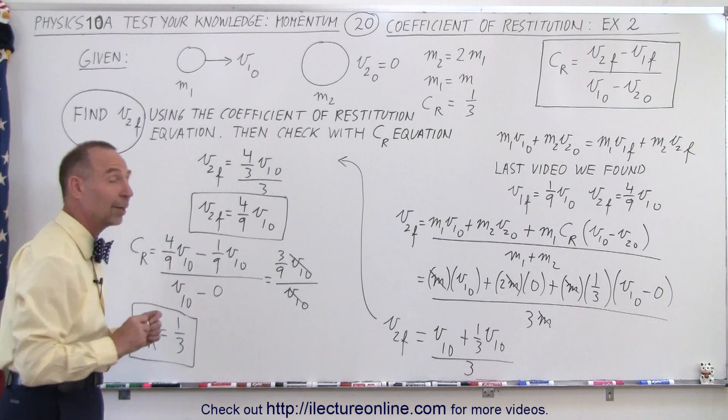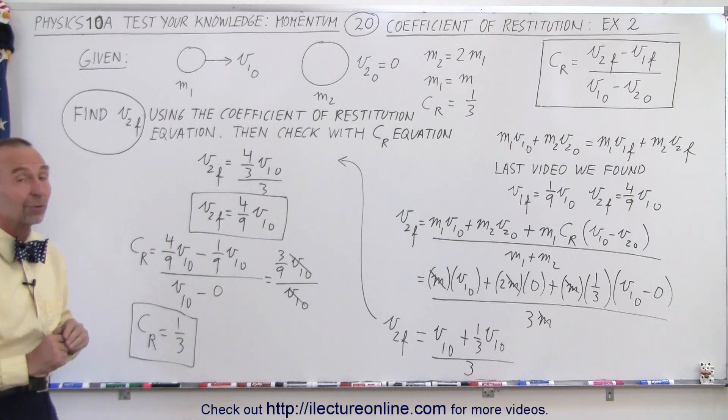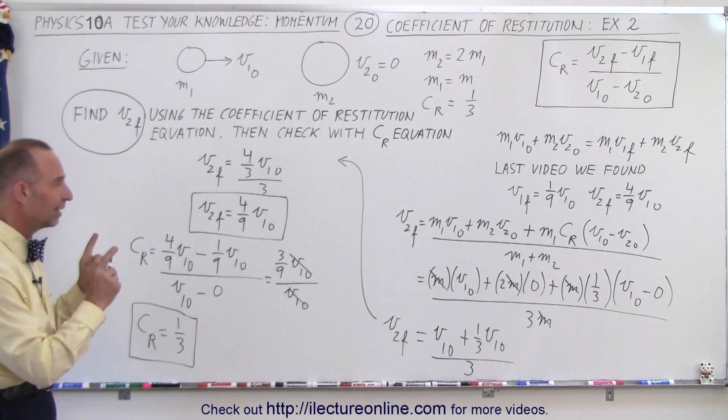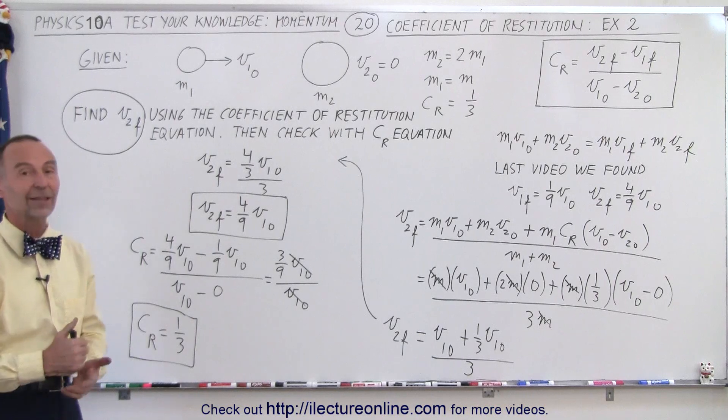Three-ninths is indeed one-third when you divide both the numerator and the denominator by 3, verifying that we did get the right coefficient of restitution. That's always a good way to verify that your final velocities were correct. And that is how that's done.